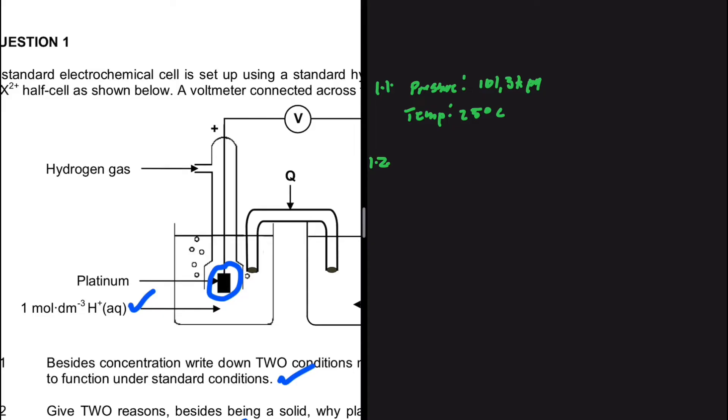Hydrogen gas, as the name says, is a gas and we need our electrode to be solid. But apart from platinum being a solid, what are the properties that it possess? Platinum does not react with H+, so that is one of the reasons why it is being used as an electrode. And another reason is that platinum is a conductor.